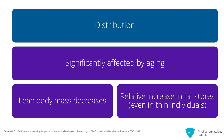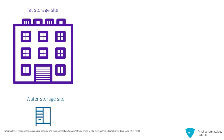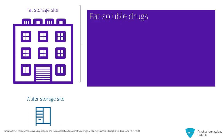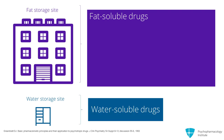This idea is counterintuitive for many. Think of the fat storage site in the elderly patient as a large room, like a warehouse, and the water storage site as a small closet. In older individuals, fat-soluble drugs — which includes, by the way, most psychotropic drugs — have a large space to be. This is called the volume of distribution. And water-soluble drugs have only a small space to be.